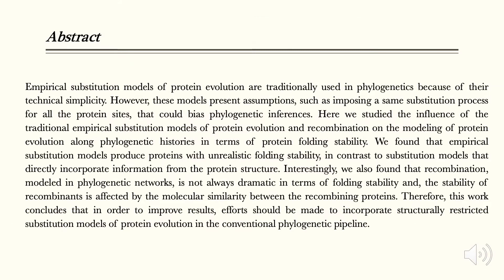As we know, empirical substitution models are one of the most used tools in phylogenetics. Despite this, these models make important assumptions which can lead to the appearance of biases that affect the result of the estimates. In this work, we have focused on studying the influence of empirical substitution models, as well as recombination and substitution rate in terms of protein folding stability.